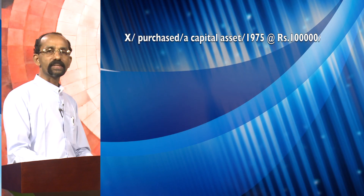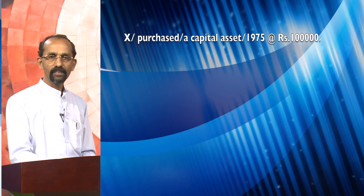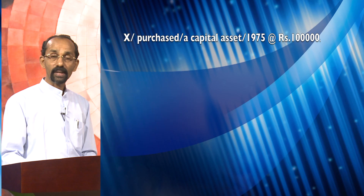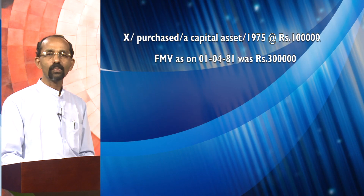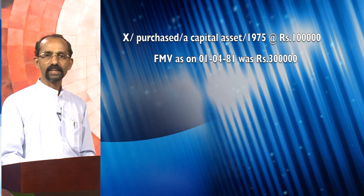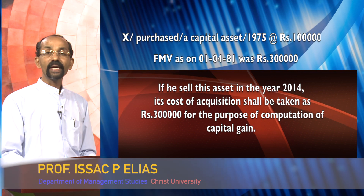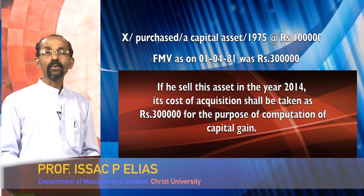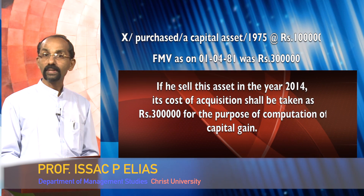In the case of assets acquired on or before 31st March 1981, the cost of acquisition is its original cost or the fair market value of that asset on 1st April 1981, whichever is higher. For example, X purchased a capital asset in the year 1975 at rupees 1 lakh, and its fair market value as on 1st April 1981 was rupees 3 lakhs. If he sells this asset in the year 2014, its cost of acquisition shall be taken as rupees 3 lakhs for the purpose of computation of capital gain.